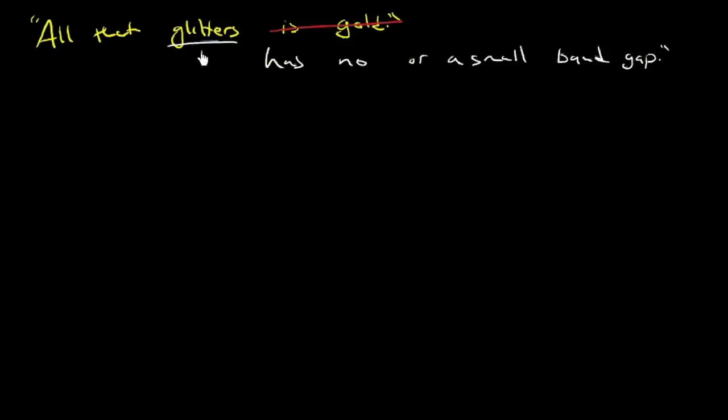What does glitter mean? Glitter means that it's shiny. And what does shiny mean? Shiny means that most of the incident light - the light that's hitting the surface - is reflected.